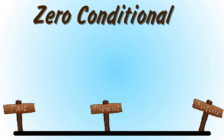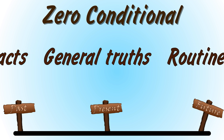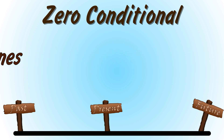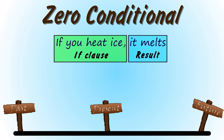Let's start with the zero conditional. We use the zero conditional to talk about facts, general truths, and routines. For example, if you heat ice, it melts. That's a fact — it's true now and it always has been true. We usually use the present simple in both the if clause and the result clause.